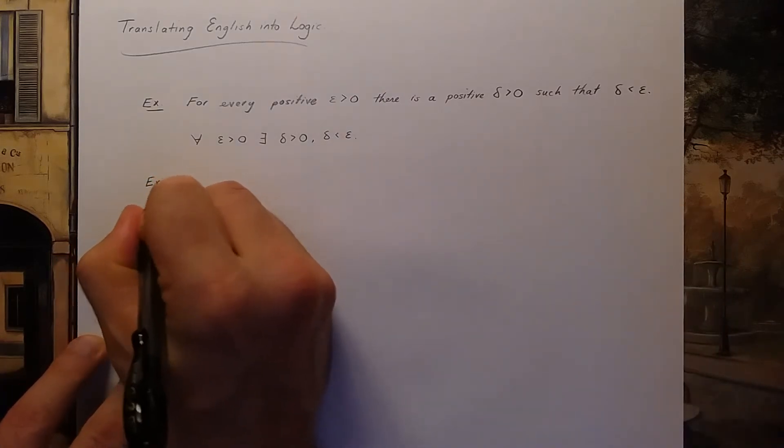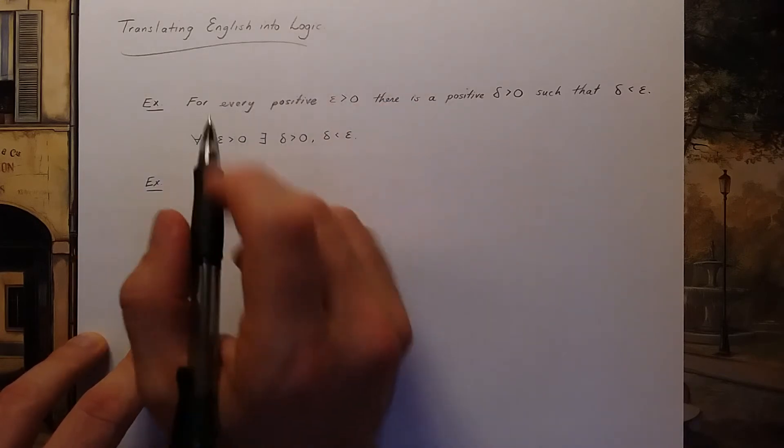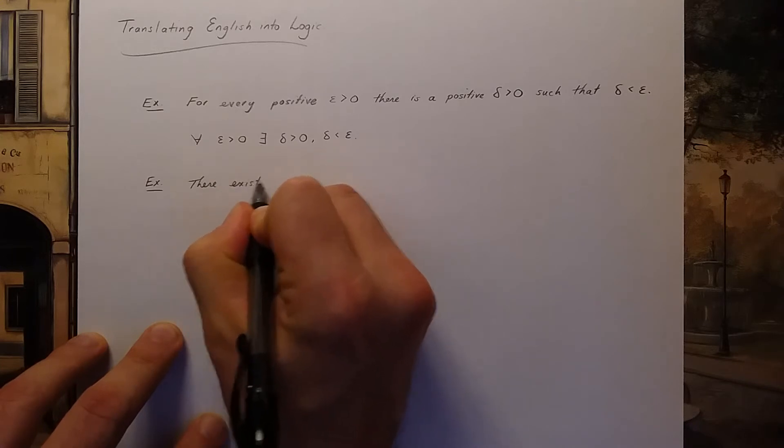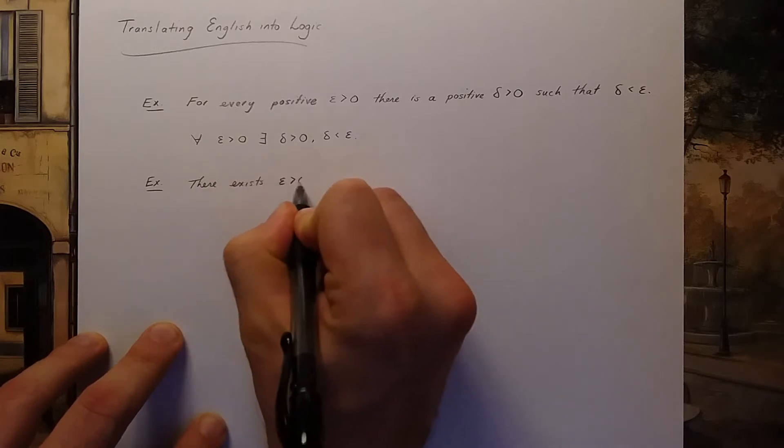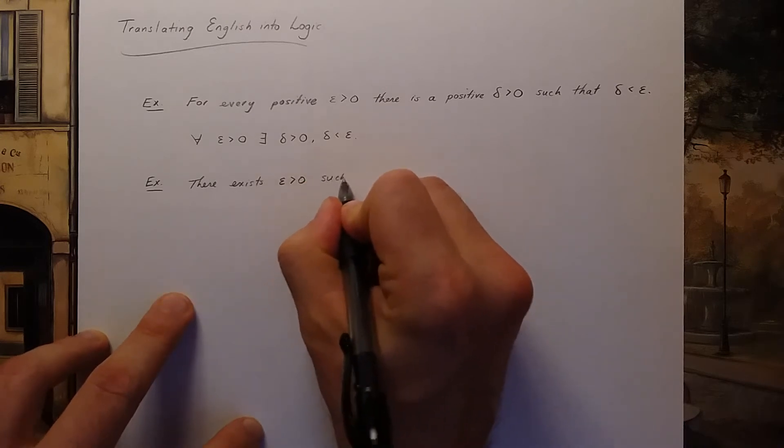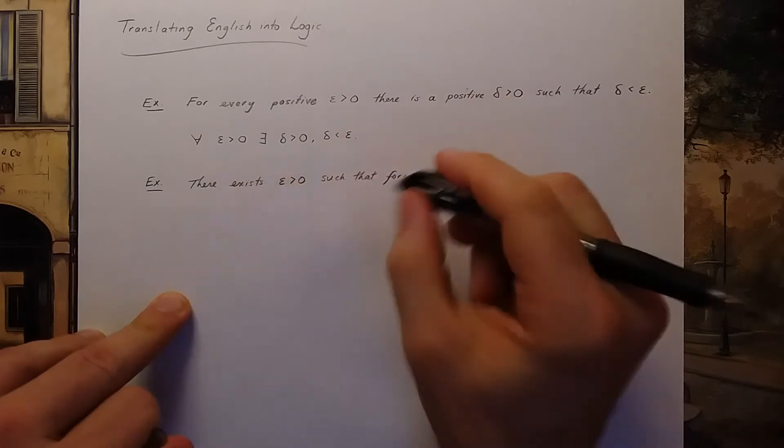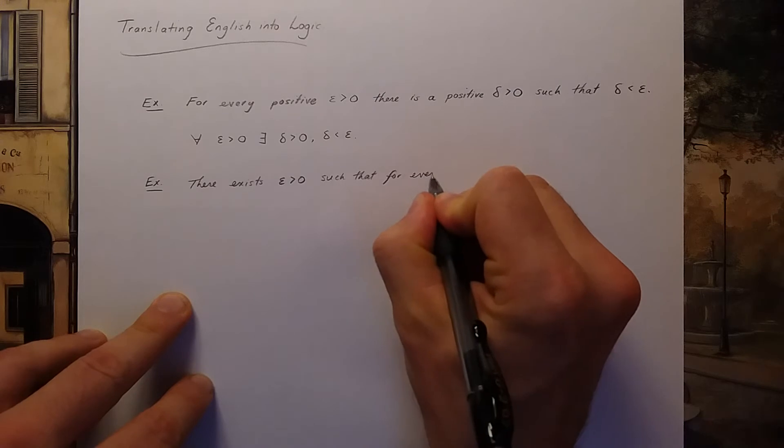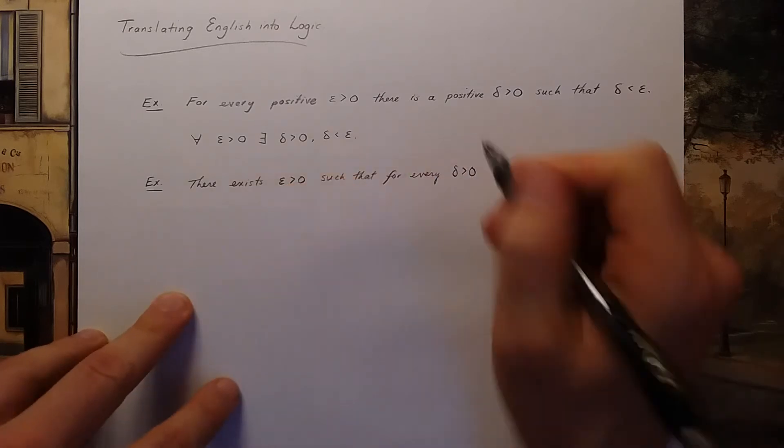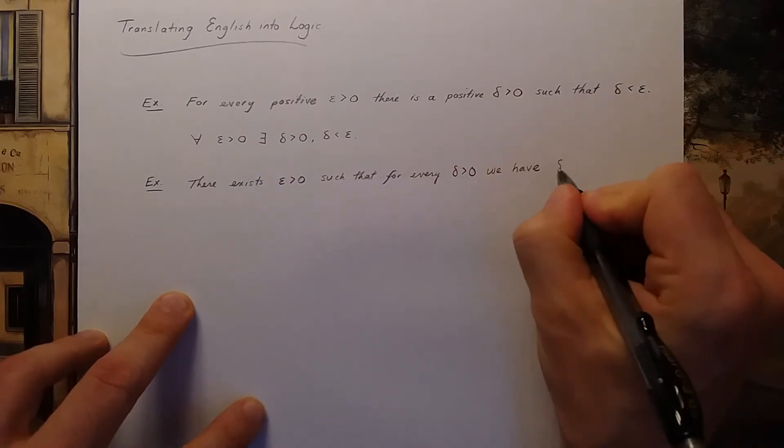Let's do another example translating English into logic. What if I switch the quantifiers around? What if I say there exists an epsilon bigger than zero such that for every delta bigger than zero we have delta is less than epsilon.